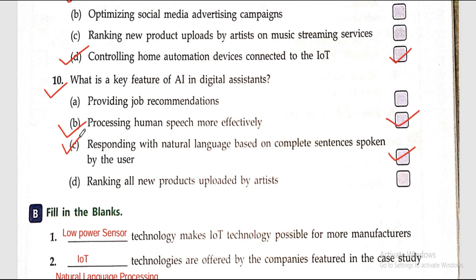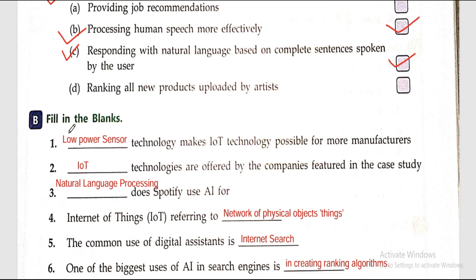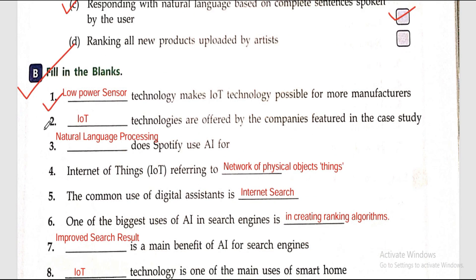Fill in the blanks. Question one: dash technology makes IoT technology possible for more manufacturers. Answer: low-power sensors. Question two: dash technologies are offered by companies featured in case studies. Answer: IoT. Question three: dash — Spotify uses AI for. Answer: natural language processing.